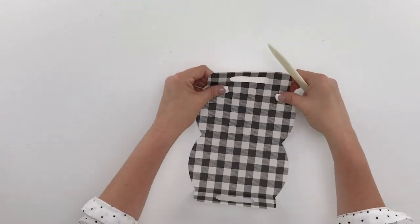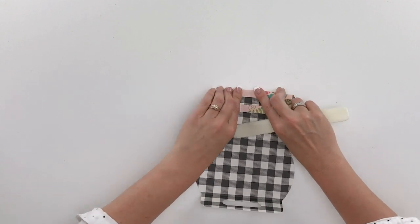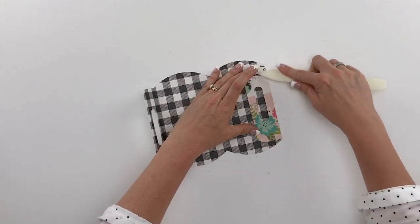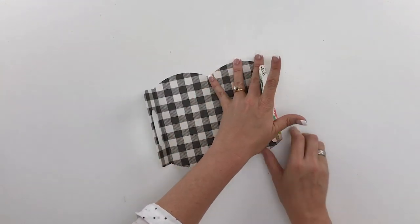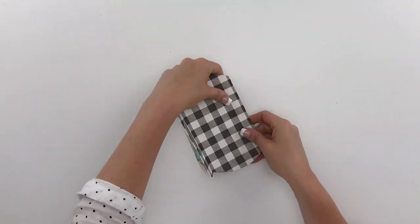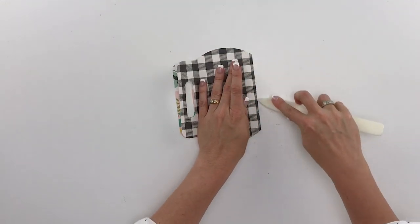So these handles are going to fold out towards the pattern paper that you want to show on your project. And then you're going to fold the project in half right there.